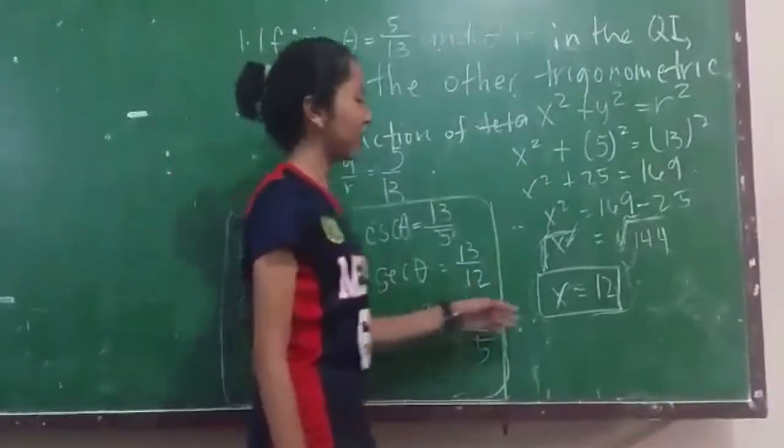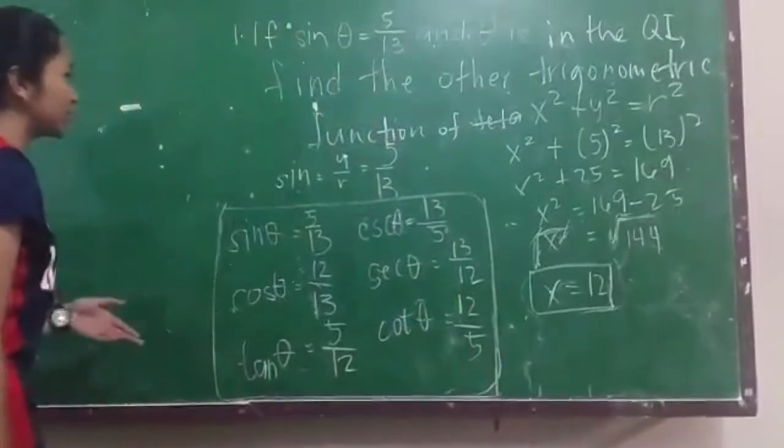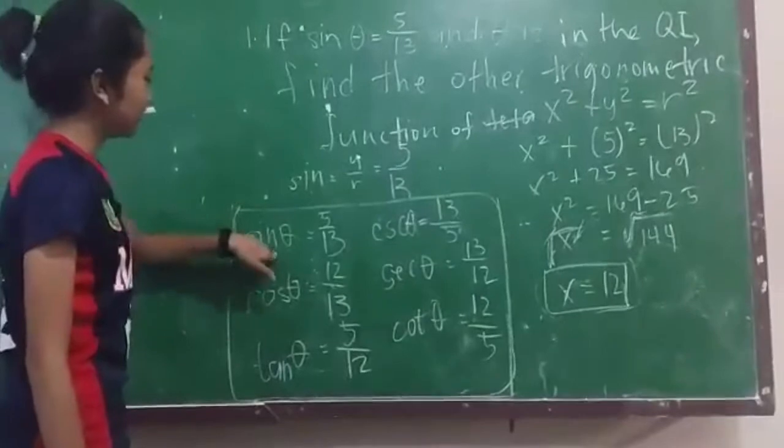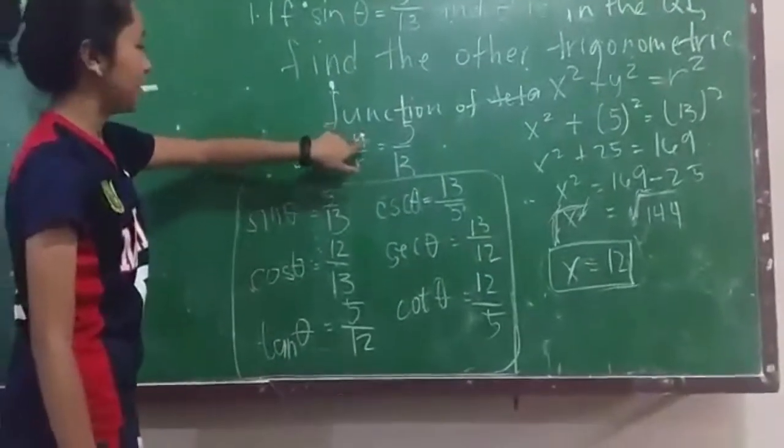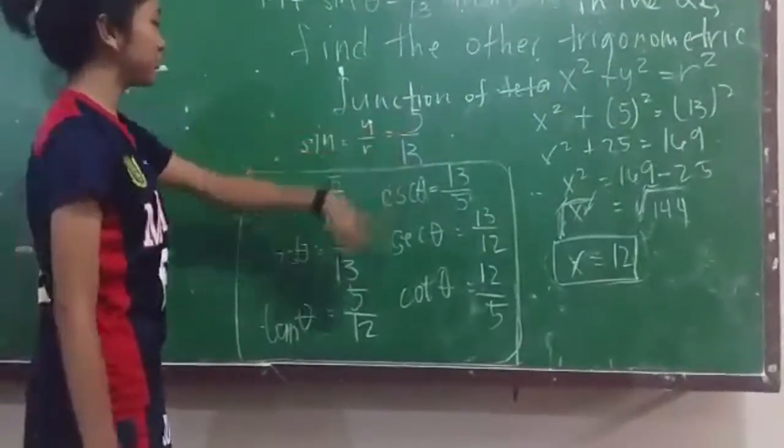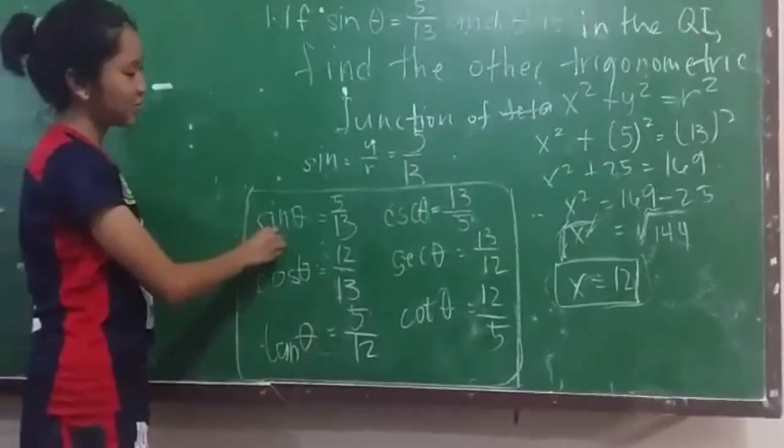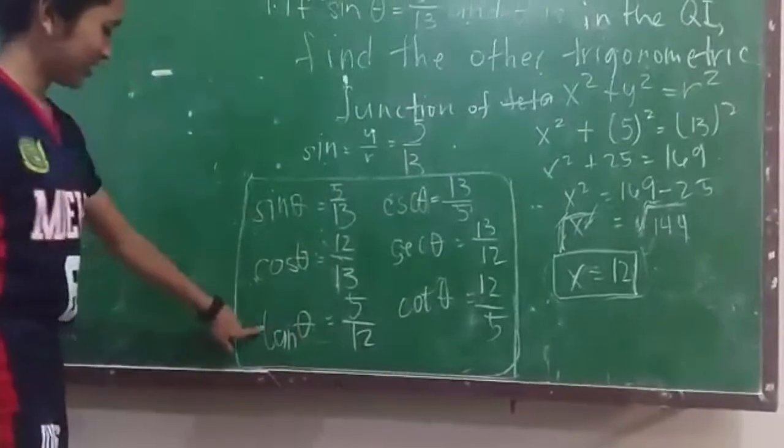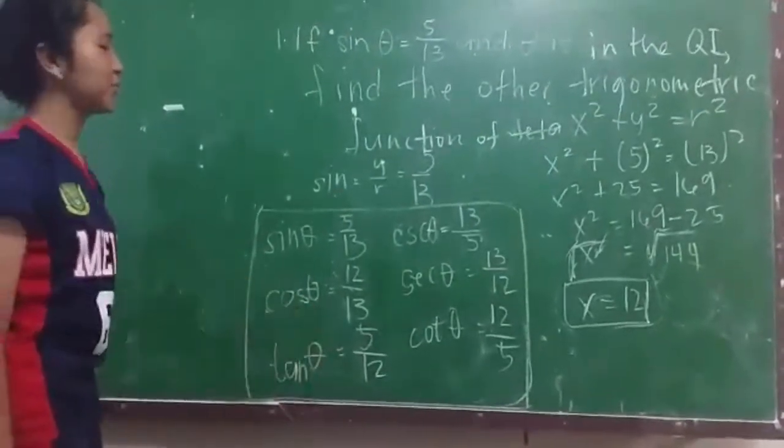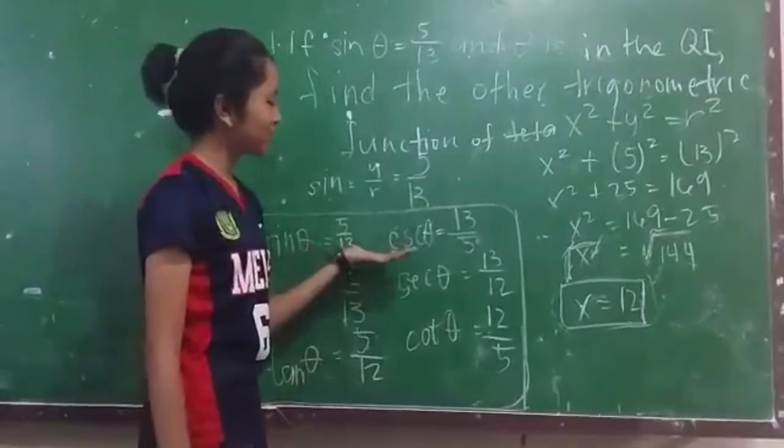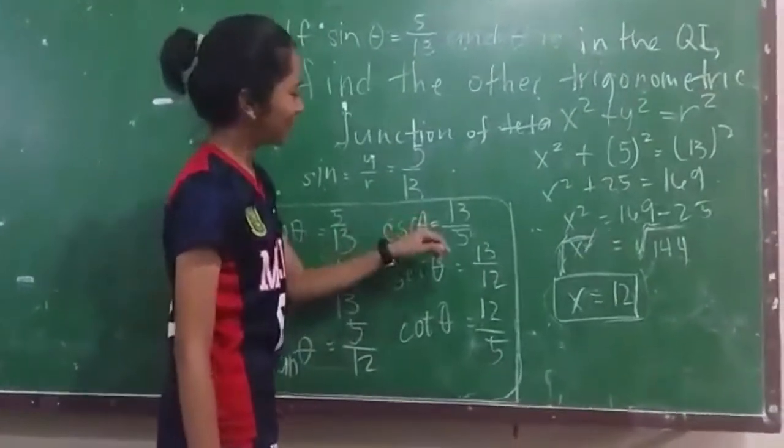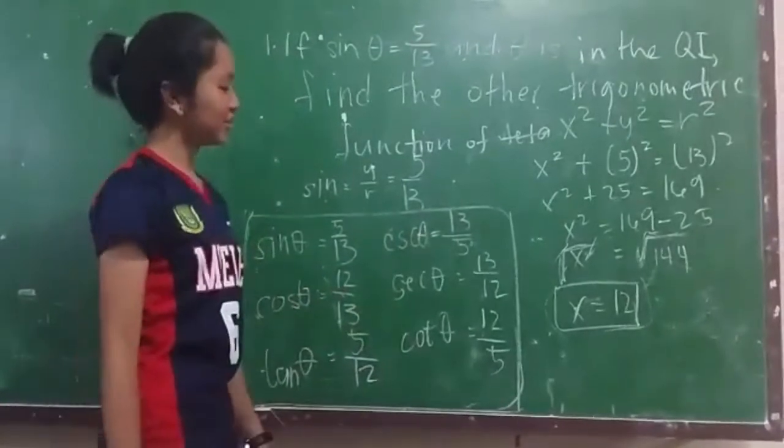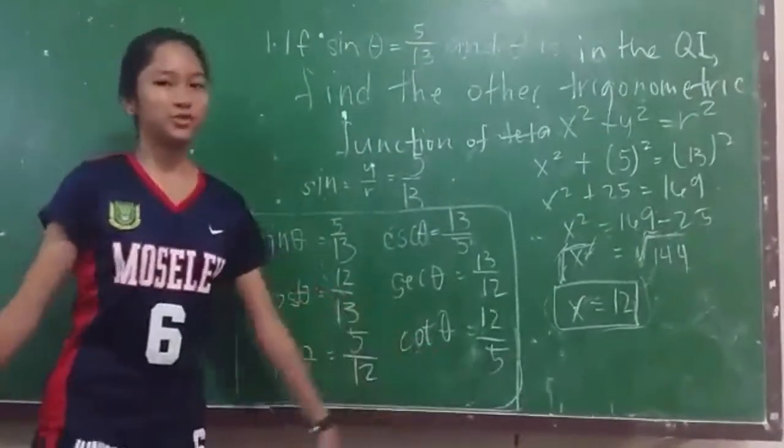Now that we have our x, we'll now proceed into getting our other trigonometric functions of theta. Sin θ is equal to y over r, which is 5 over 13. Cos θ is equal to 12 over 13. Tan θ is equal to 5 over 12. Csc θ is equal to 13 over 5. Sec θ is equal to 13 over 12. And cot θ is equal to 12 over 5.